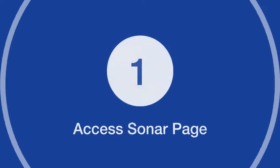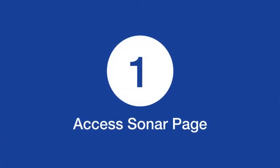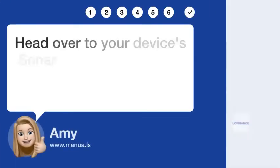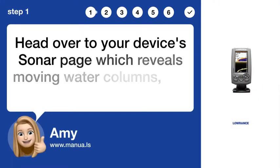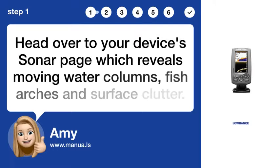Step 1: Access sonar page. Head over to your device's sonar page, which reveals moving water columns, fish arches, and surface clutter.